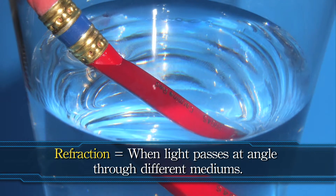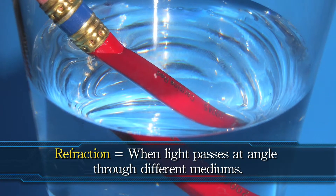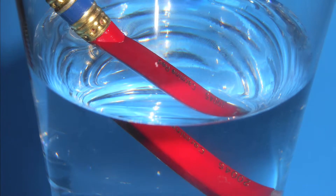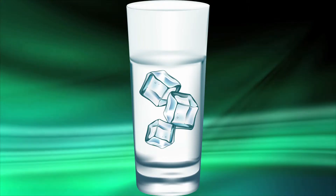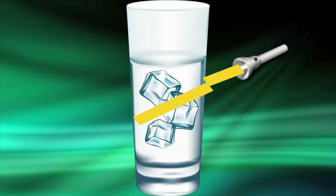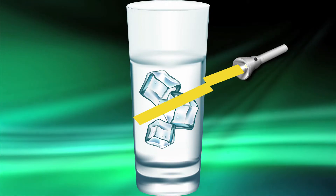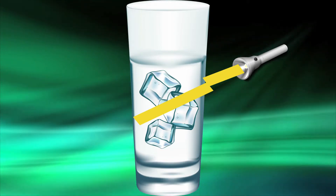This is called refraction. Refraction is easily visible when you shine a light beam into a glass or bowl of water. But why does the angle change?